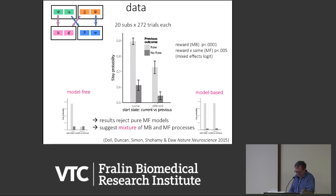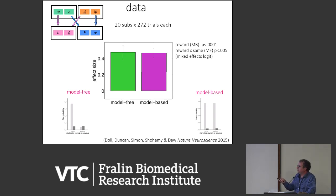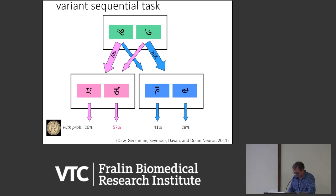We can take these four bars and reduce them with a regression to two bars: the effect size of the model-free part and the effect size of the model-based part. In this case they're about the same — about 50-50. We've also used a slight variation on this a lot, which has a single start state and decouples the consequences of reward history from second-level history with stochastic transitions instead of having two start states. But the logic is very similar.